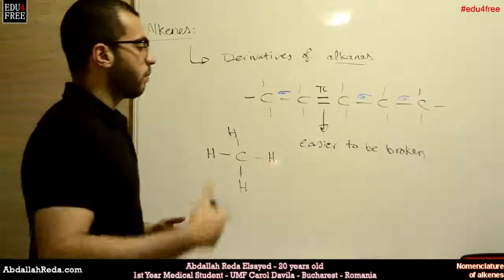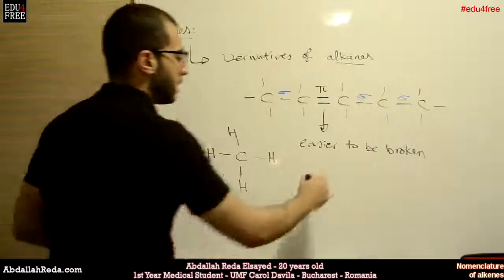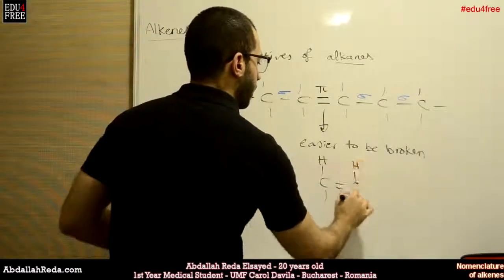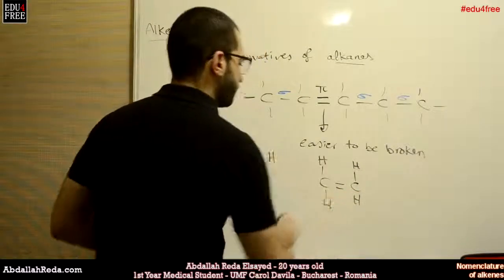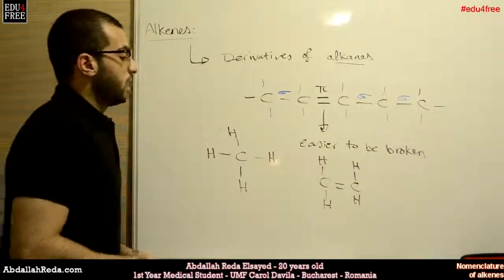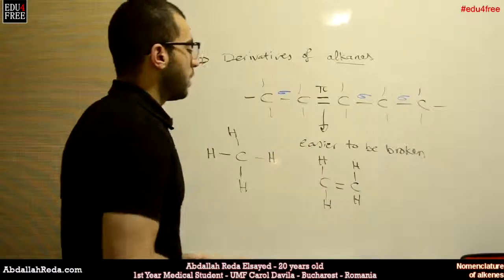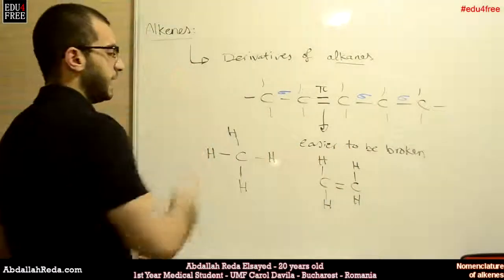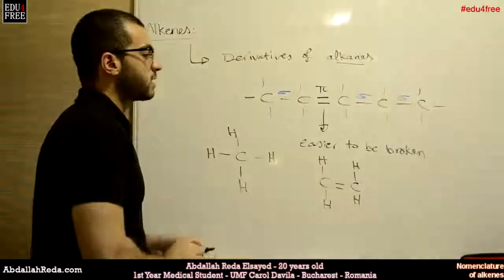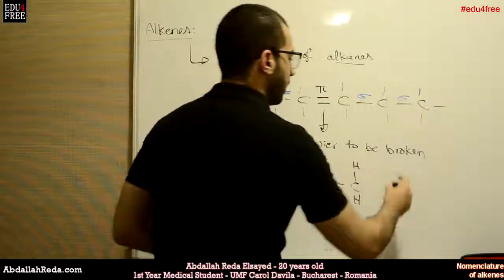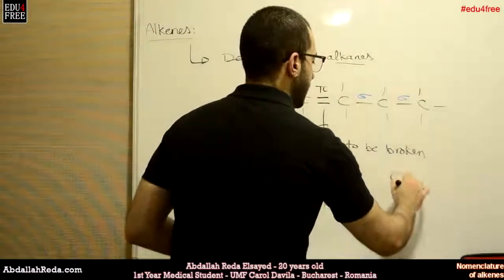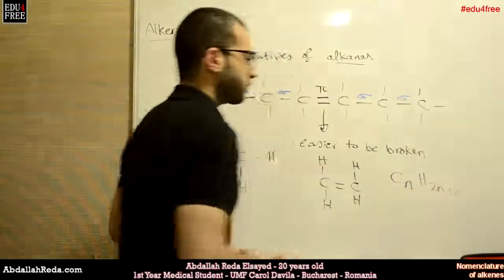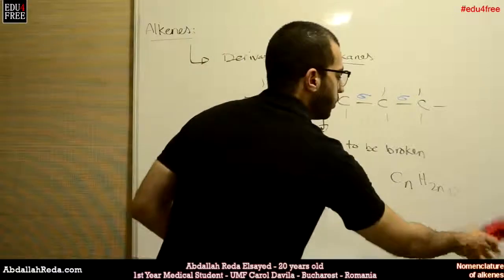It starts with two carbon atoms, which is ethene. It looks like that - two carbon atoms and four hydrogens. So this is the main structure of the alkene. From this we conclude that the formula, instead of being CnH2n+2, we don't have this 2 anymore.